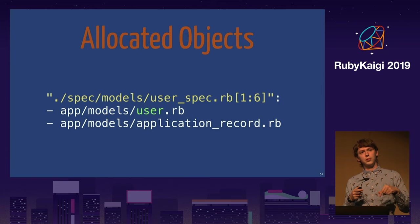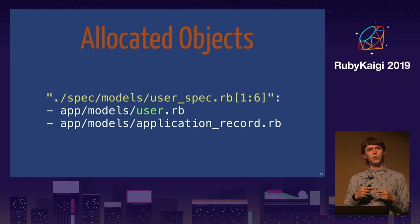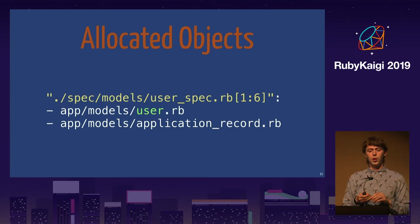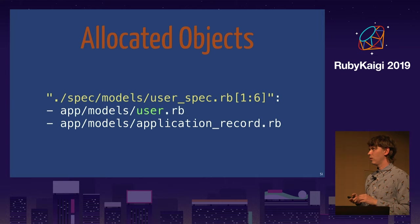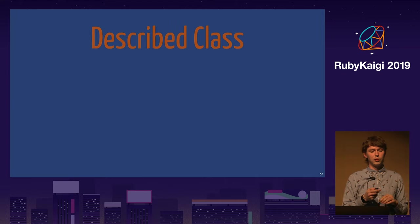Allocated Objects is actually a bit slower than Coverage because of the TracePoint, but it gives great results.